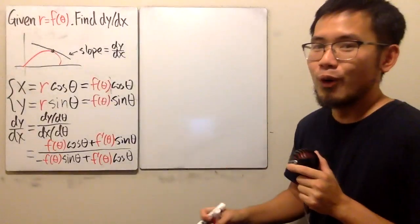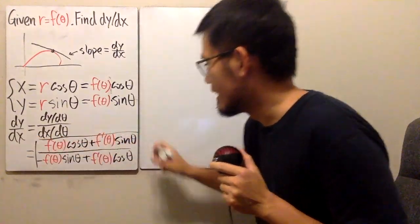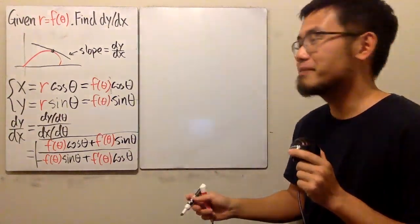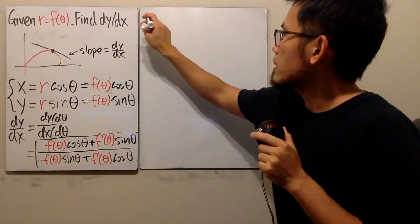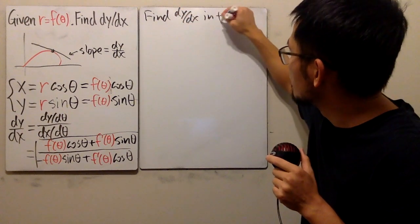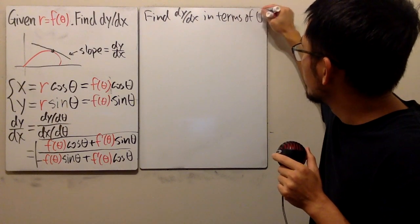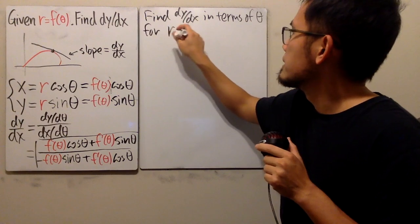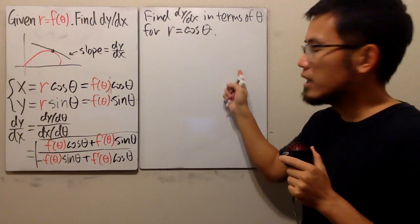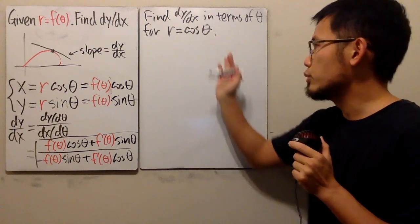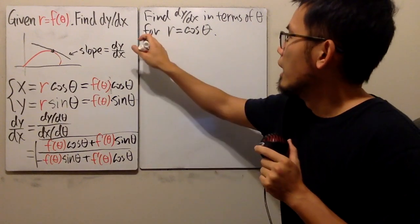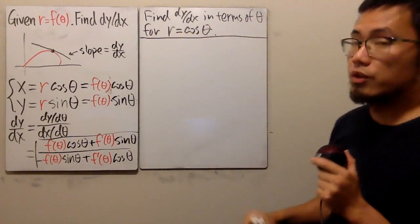Again, this is not what I would recommend — don't memorize this formula. Let me give you an example: find dy/dx in terms of theta for r equals cosine theta. If you graph r equals cosine theta, you get a circle. You can use a graphing calculator or convert back to Cartesian to verify.